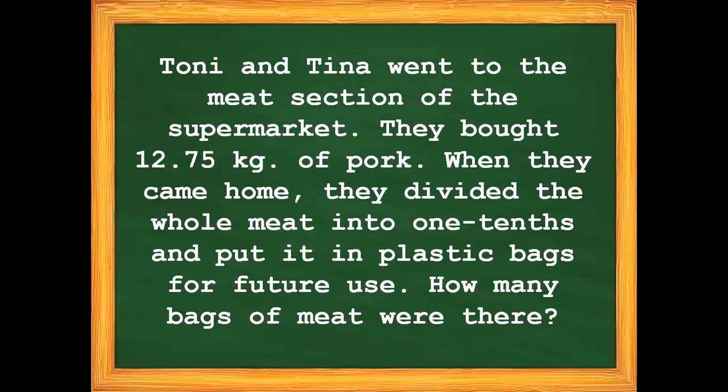Tony and Tina went to the meat section of the supermarket. They bought twelve-and-seventy-five-hundredths kilograms of pork. When they came home, they divided the whole meat into one-tenth portions and put them in plastic bags for future use. How many bags of meat were there?